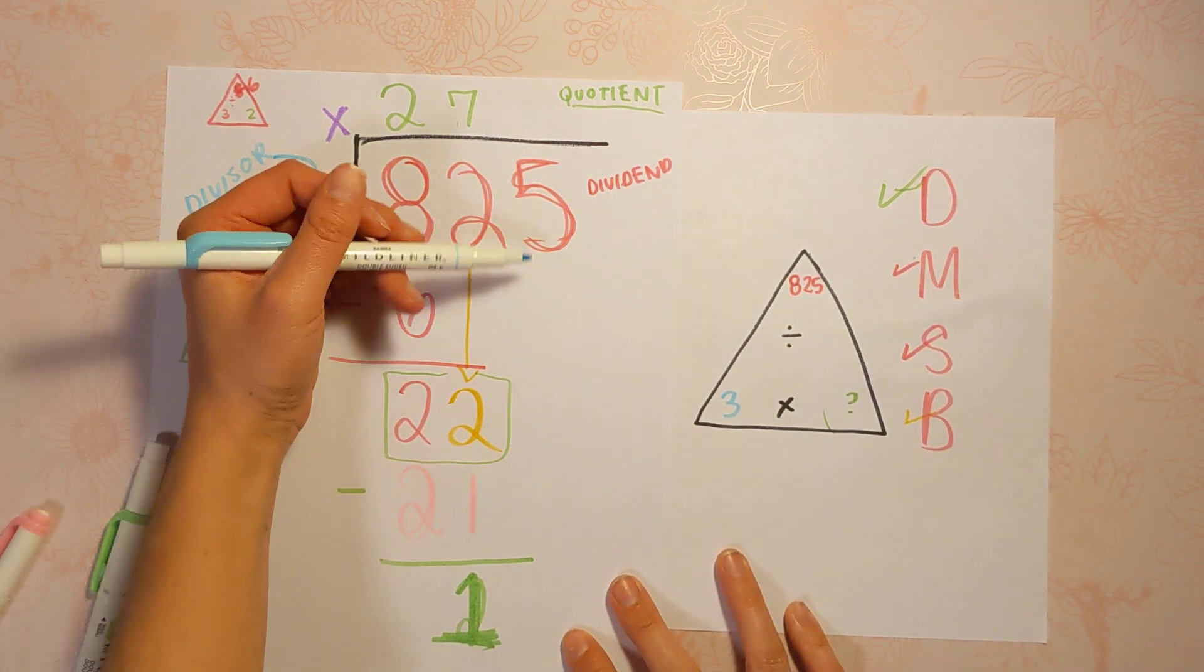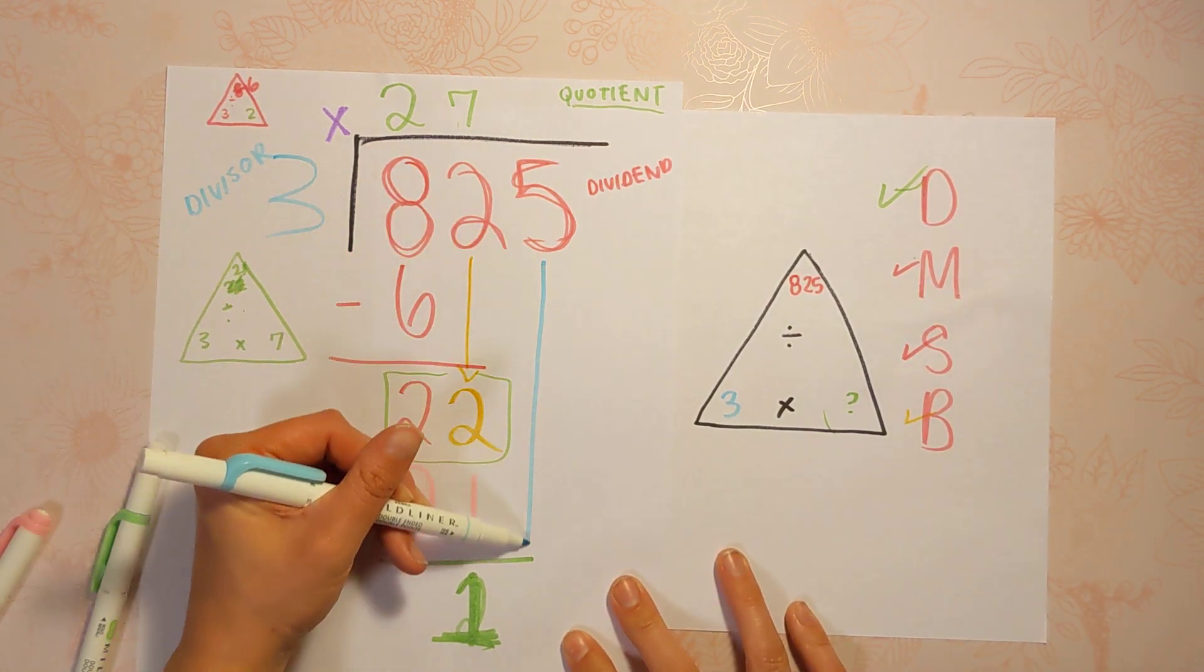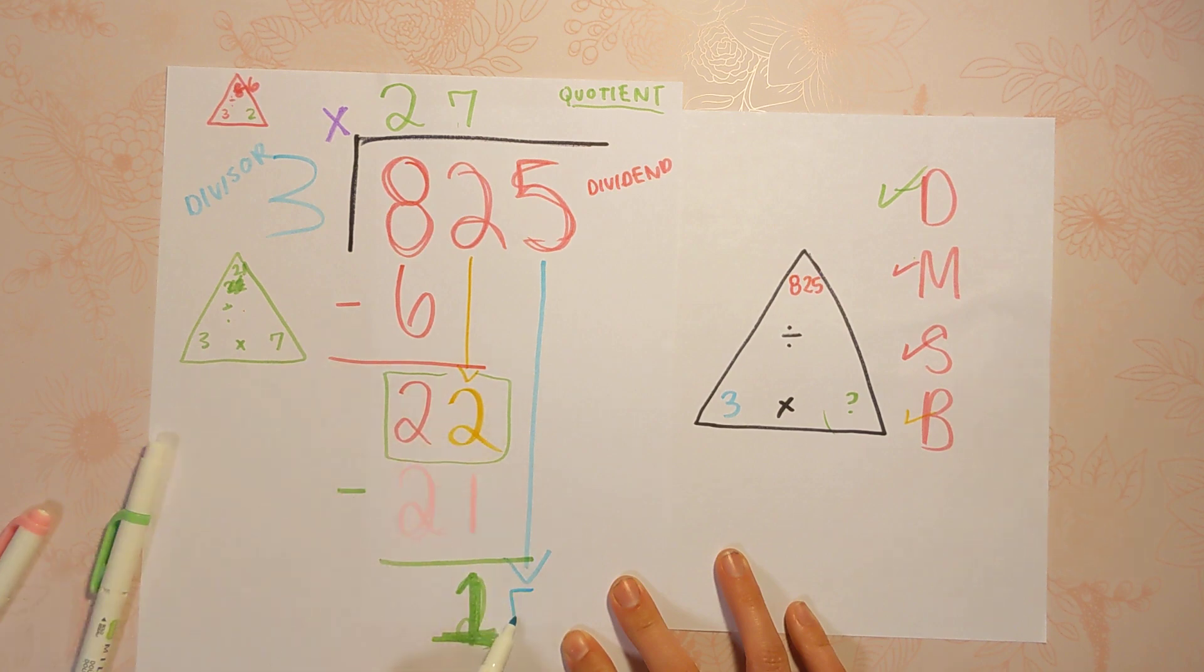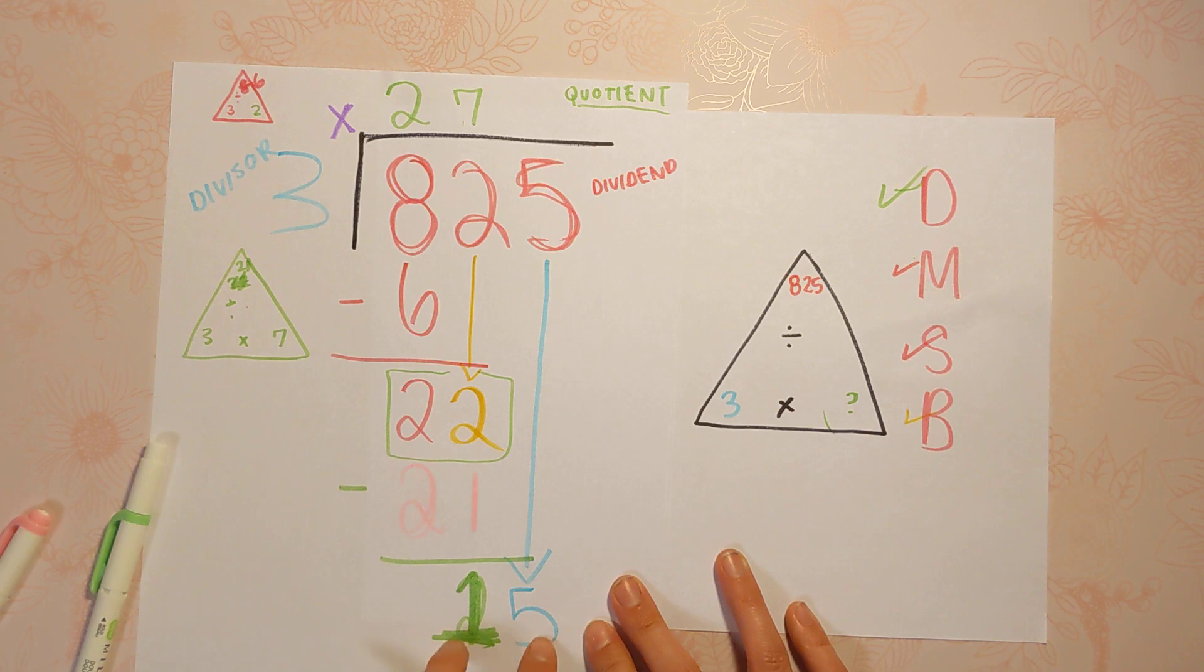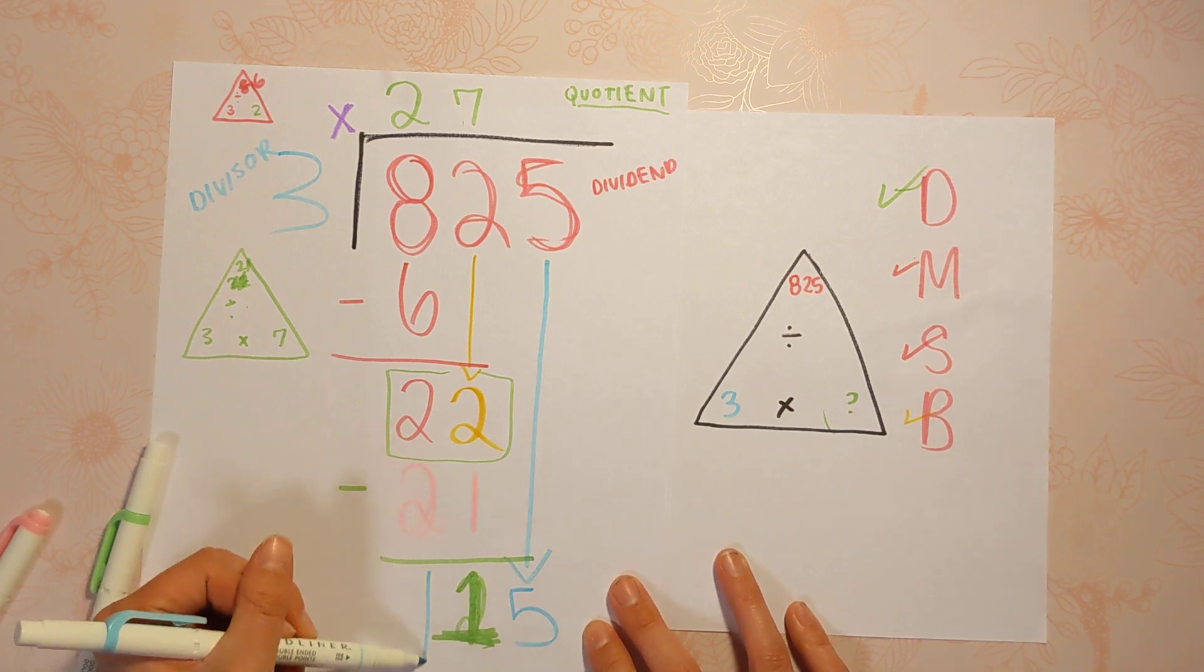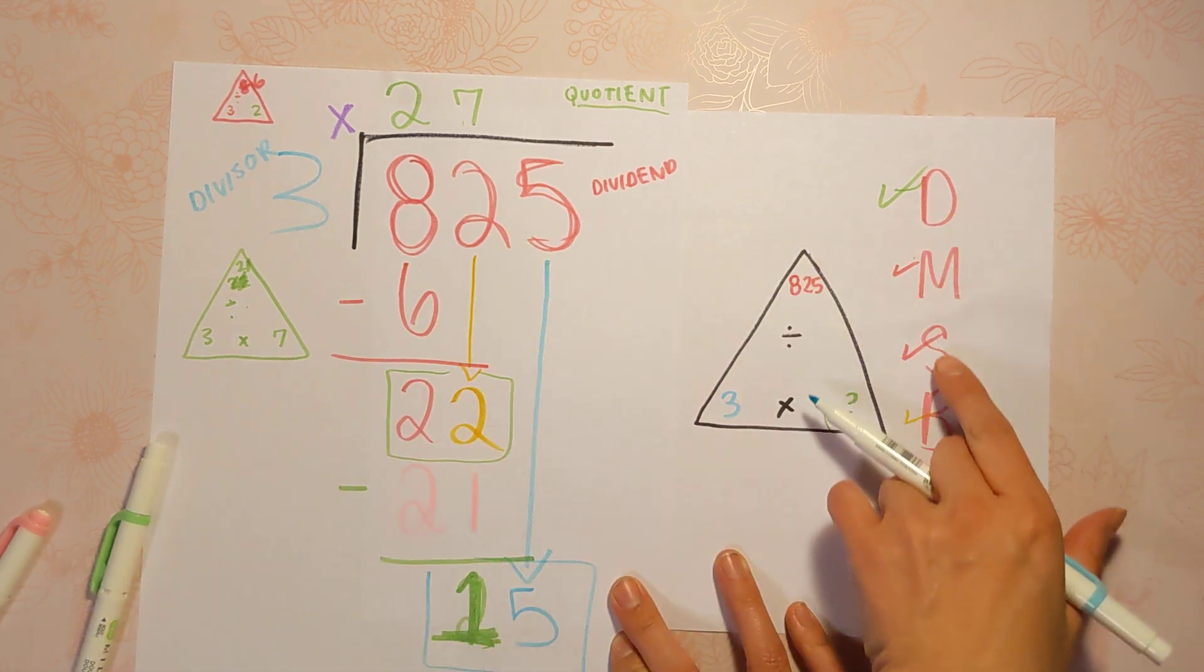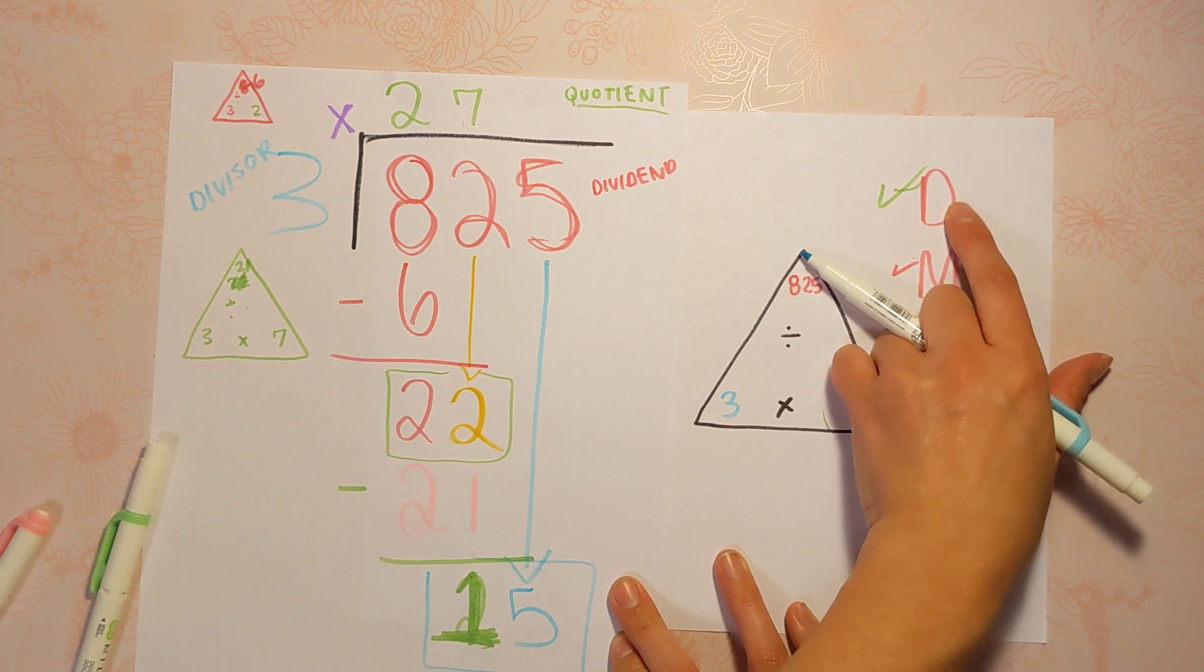So we're going to grab this 5. It's been feeling kind of left out. We're going to bring him down, let him join the party. And this is our last number because there's nothing left over here. So now we'll do this step again. The whole thing again. Divide, multiply, subtract, bring down. D for divide.